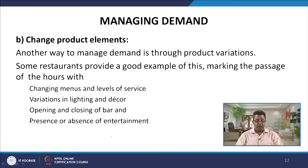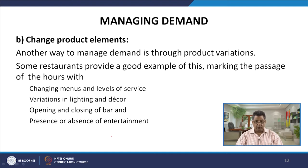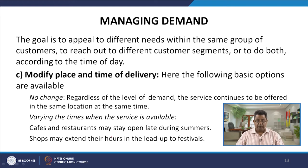The second way of smoothing demand is to change product elements. Some restaurants provide a good example, marking the passage of hours with changing menus and levels of service, variations in lighting and decor, opening and closing of the bar, and presence or absence of entertainment — appealing to different needs of the same customers, reaching different segments, or both depending on the time of day.